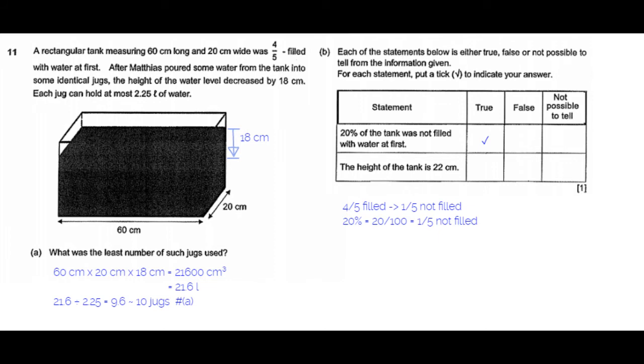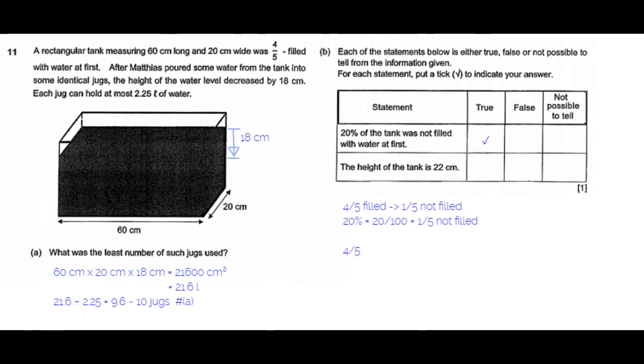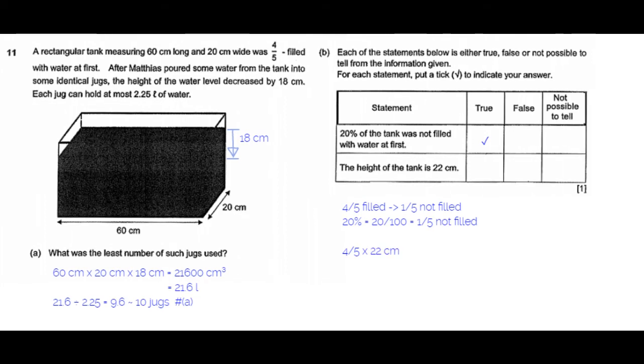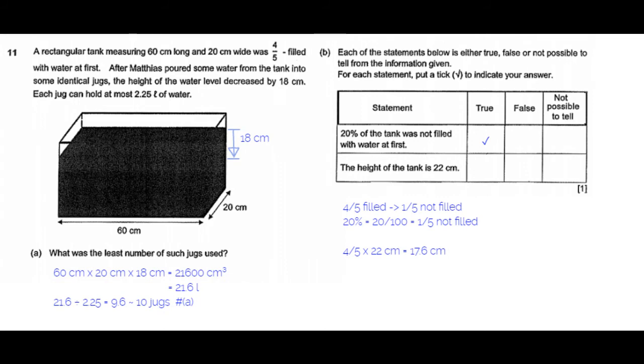The second statement is the height of the tank is 22 cm. When it says four-fifths of the tank was filled and we assume the height of the tank is 22 cm, that means four-fifths of 22 cm is equal to 17.6 cm, which means 17.6 cm of water only was there initially. But as per the question, the height of the water level decreased by 18 cm, which is not possible. So this statement is false.